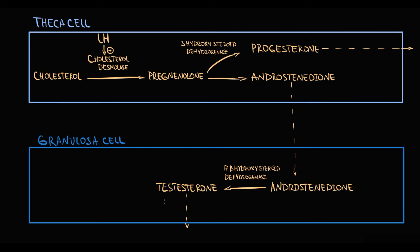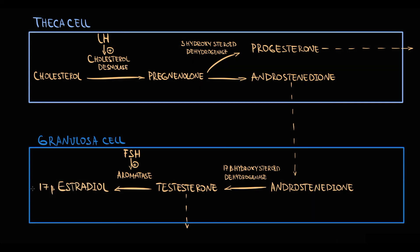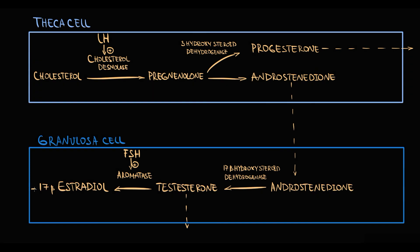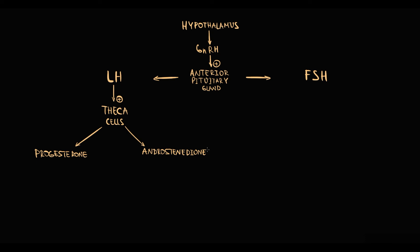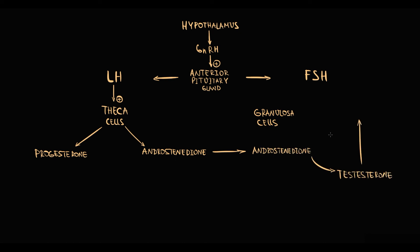Granulosa cells can secrete testosterone into the blood, but the alternative option is that follicle-stimulating hormone, by stimulating aromatase, forces granulosa cells to convert testosterone into 17-beta estradiol, which is then secreted into the blood. So androstenedione diffuses from theca cells into granulosa cells, where it produces testosterone; FSH can also force granulosa cells to convert that testosterone into estradiol.